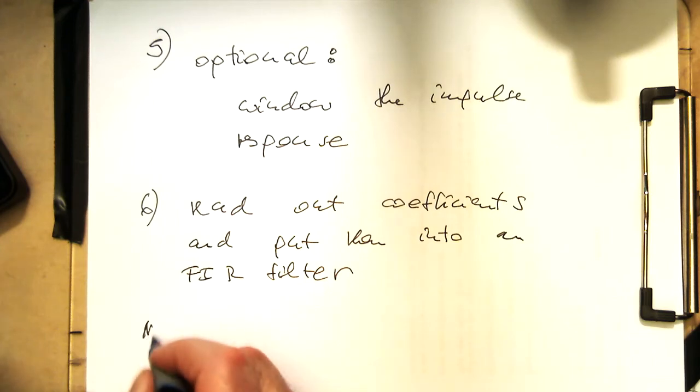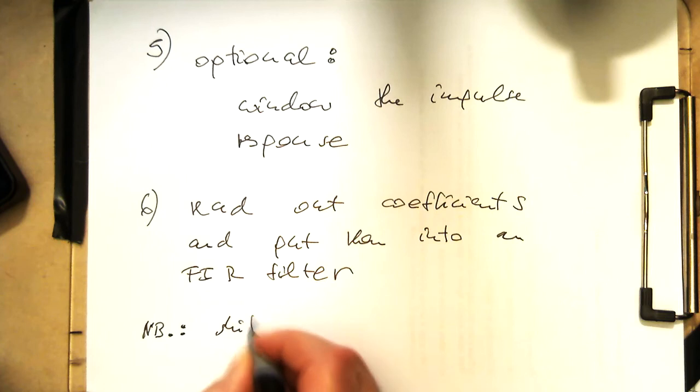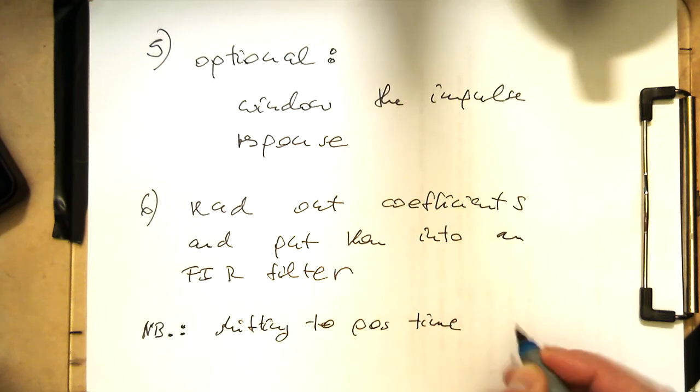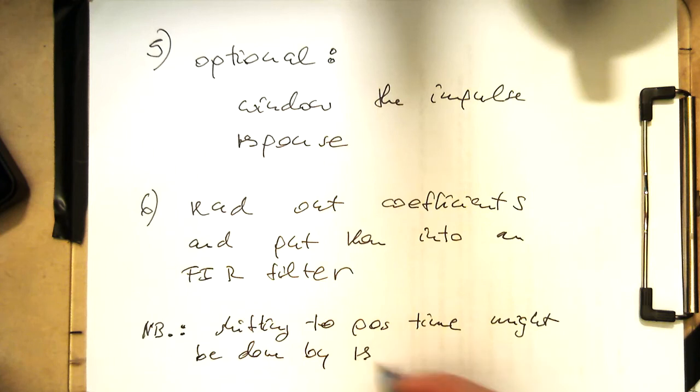So just as a comment here also in terms of previous lectures, the shifting to positive time might be done by reshuffling or shift, and can be done at different steps in the design process, but we just need to be obviously careful because in an FIR implementation, only positive time steps can be done. Negative time steps are acausal and cannot be done. But otherwise it's a very straightforward and simple process.